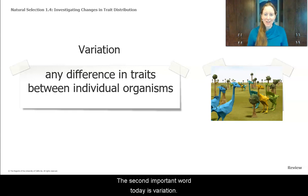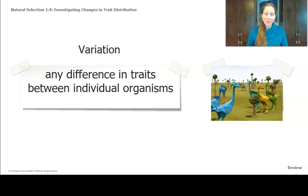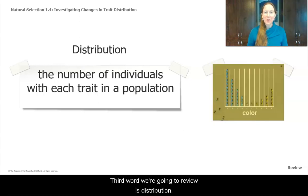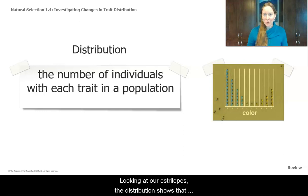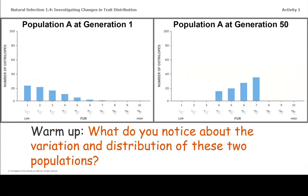The second important word to review is variation. Variation is any difference in traits between individual organisms. We looked at Australopes and found they have variation in things like neck length, color, and amount of fur. Rough-skinned newts have variation in their size and the amount of poison they have. The third word is distribution — the number of individuals with each trait in a population. For example, most Australopes are blue, some are yellow, and very few are green.